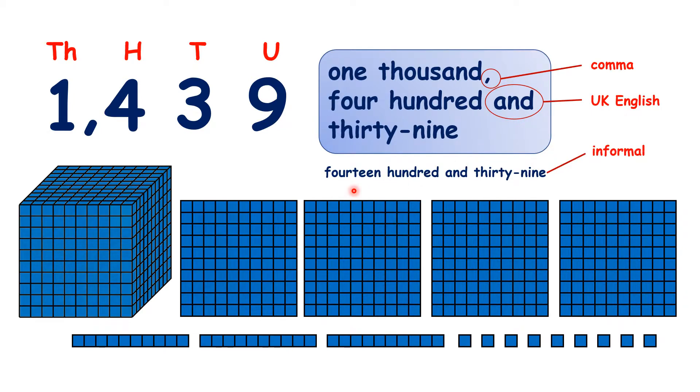Occasionally, you might hear someone say this number as fourteen hundred and thirty-nine. You probably won't see this in any maths textbooks, because it's quite an informal and old-fashioned way of saying the number, but it's not wrong. If you have one thousand and four hundreds, you do have fourteen hundreds, because one thousand is the same as ten hundreds.